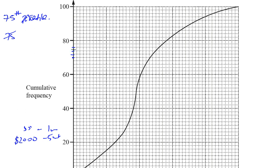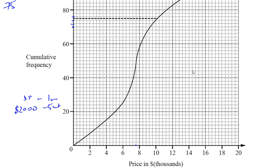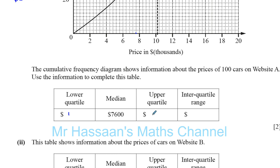Drawing the line as accurately as possible until it hits the curve, then going down. It looks like it's about halfway into the square above ten thousand. Each square is worth 400, so halfway between ten thousand and ten thousand four hundred gives us approximately ten thousand two hundred. So the upper quartile is ten thousand two hundred.